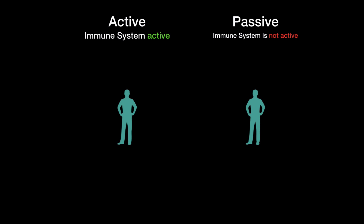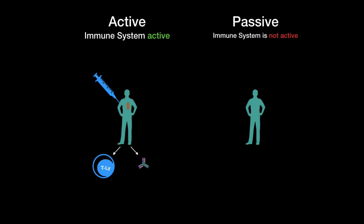So let's start with the active. There are mainly two ways to initiate the active immune response. One of them is naturally by getting infected with any type of microorganism. The other type is artificial by injecting the inactive microorganism or peptides of it. Either way, the reason why it's called active is because T lymphocytes are going to be involved and they're going to help produce antibodies. And as a result, the active immune system is going to form an immunological memory.